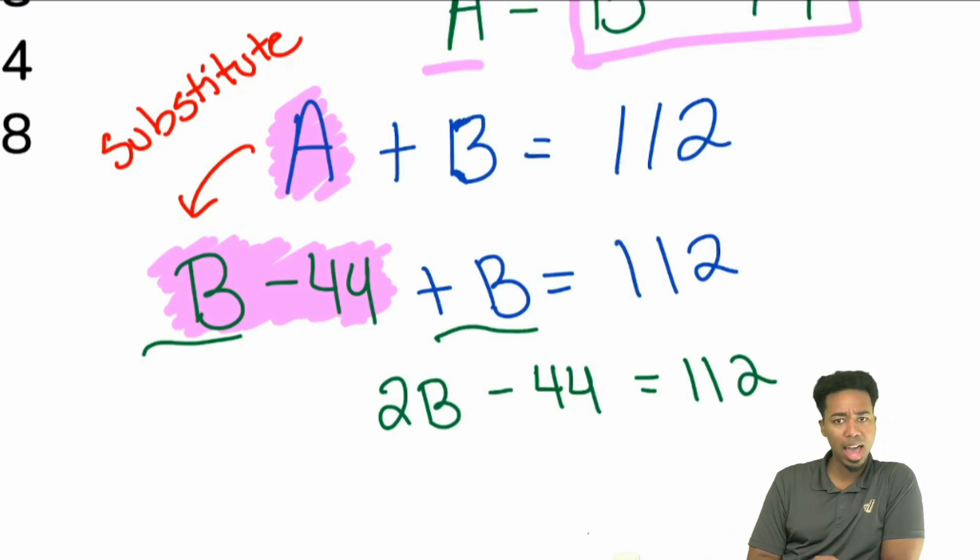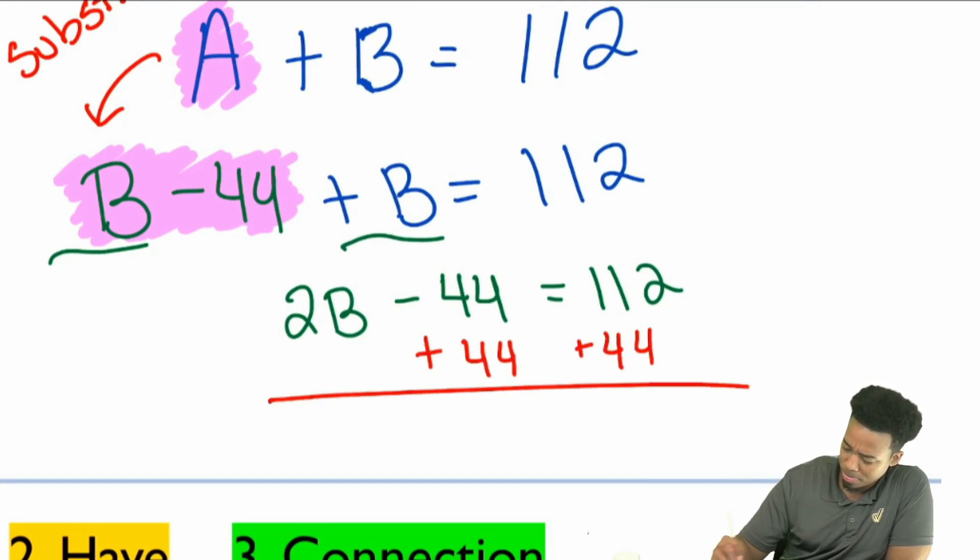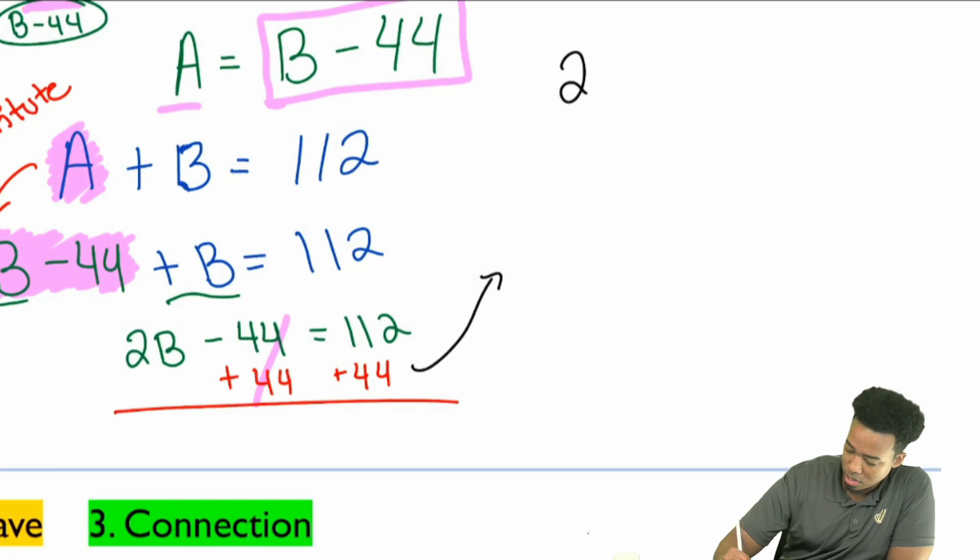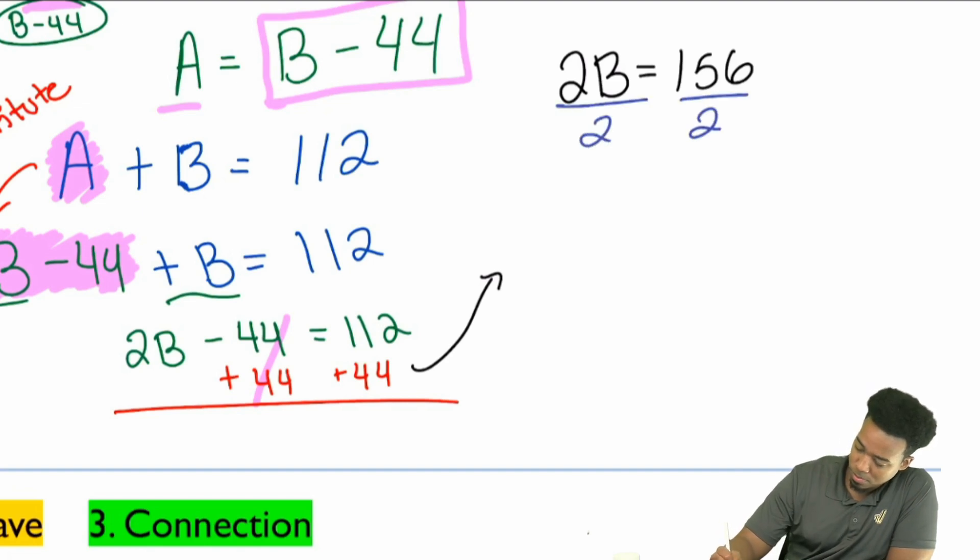2B minus 44 equals 112. Everybody, next step, we'll add 44 to both sides. That's right, Landa. So go ahead right there, add 44. It's going to for sure cancel out right here, leaving us with 2B. I'm going to push out. And the last step we'll take is we'll divide both sides by 2. Divide by 2, divide by 2. That's going to be gone right there. And that's going to give us B equals 156 divided by 2, which would end up being 78.